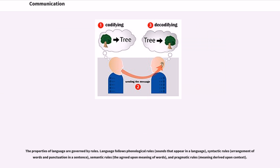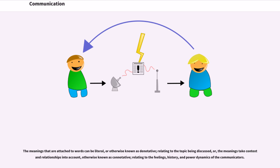Language follows phonological rules (sounds that appear in a language), syntactic rules (arrangement of words and punctuation in a sentence), semantic rules (the agreed upon meaning of words), and pragmatic rules (meaning derived upon context). The meanings that are attached to words can be literal or otherwise known as denotative, relating to the topic being discussed, or the meanings take context and relationships into account, otherwise known as connotative, relating to the feelings, history, and power dynamics of the communicators.